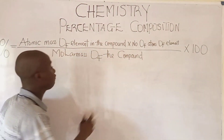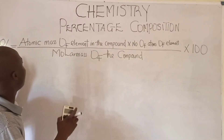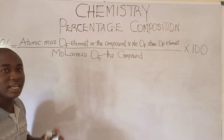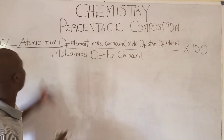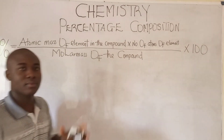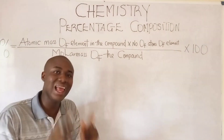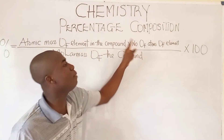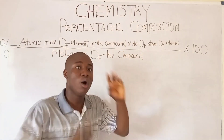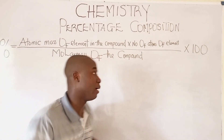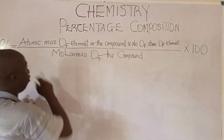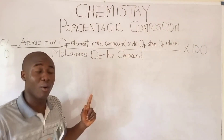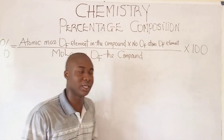You can see the formula written on the board. Percentage composition equals the atomic mass of the element in the compound, times the number of atoms of that element in the compound, over the molar mass of the compound, times 100.